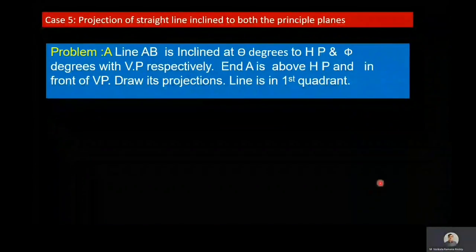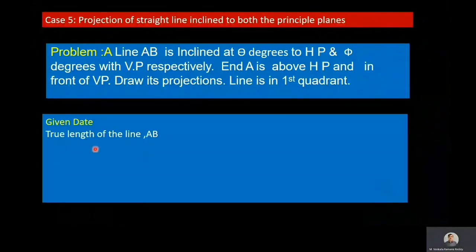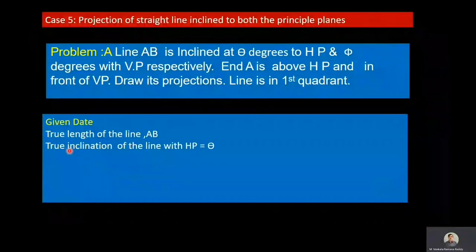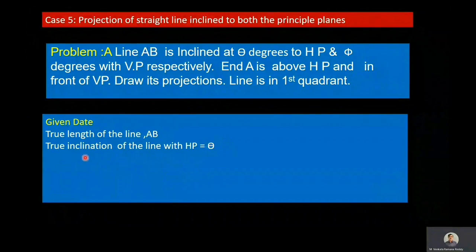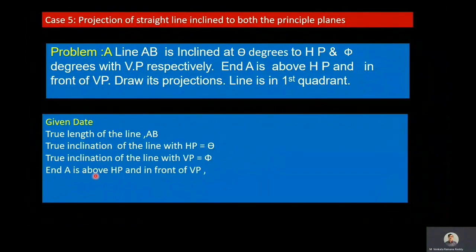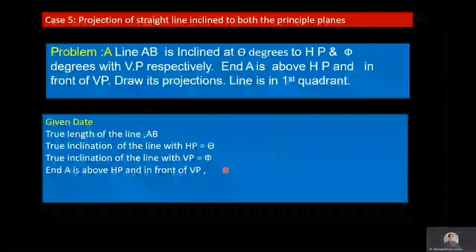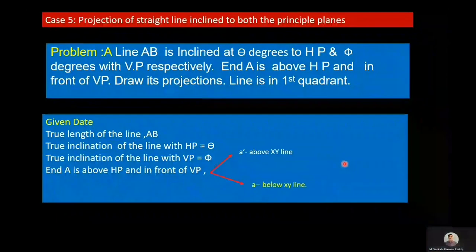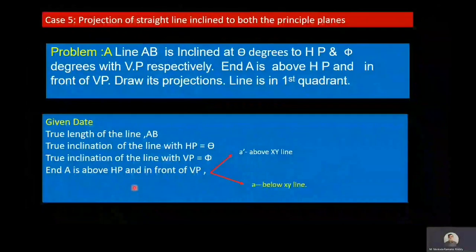Now we will write the data. True length of the line is AB. True inclination of the line with HP is theta. True inclination of the line with VP is phi. End A is above HP and in front of VP, meaning A' is above XY line and A is below XY line. With this data, we will move towards the solution.